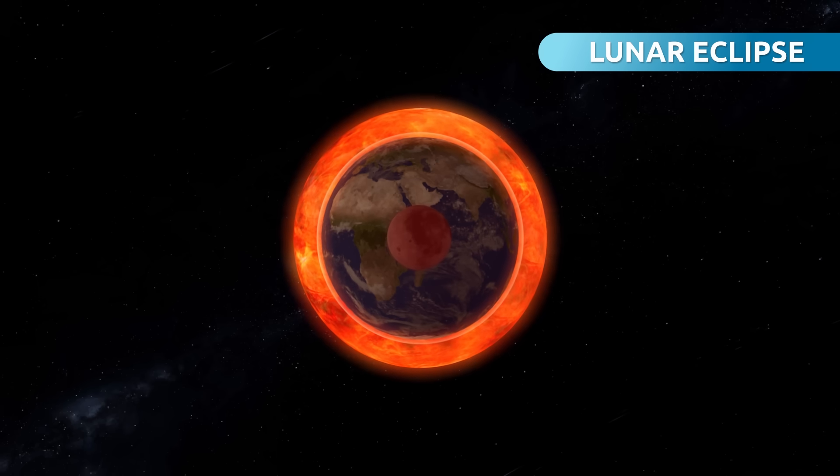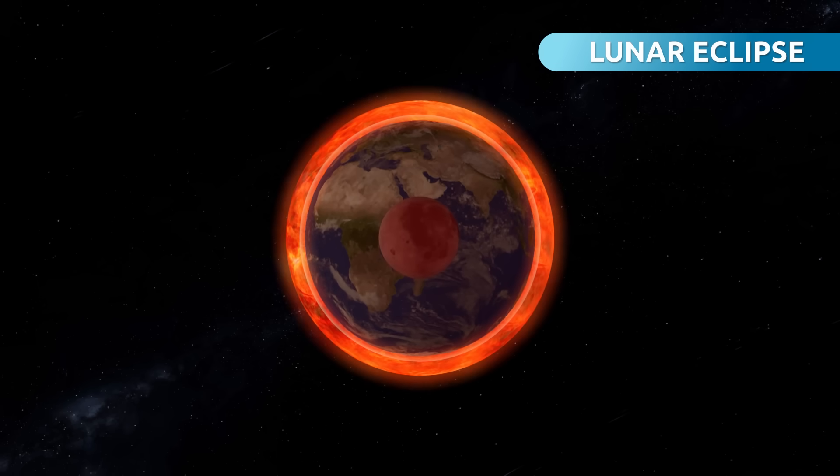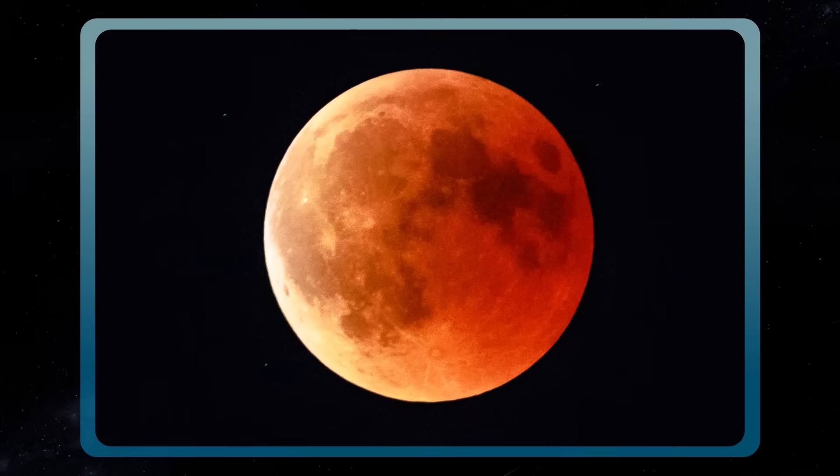During the eclipse, a shadow is formed, and the Moon becomes dark in our view, changing its color to red. This phenomenon is known as Blood Moon.